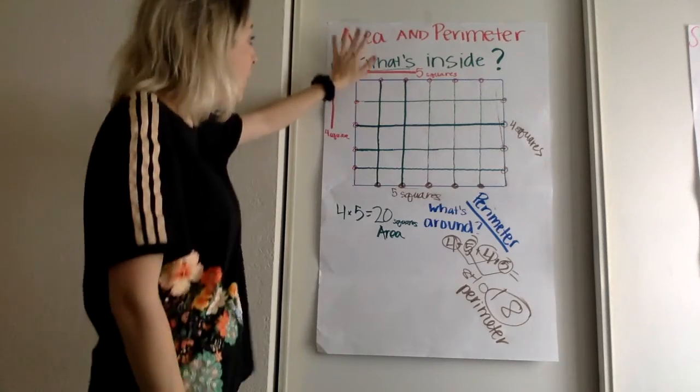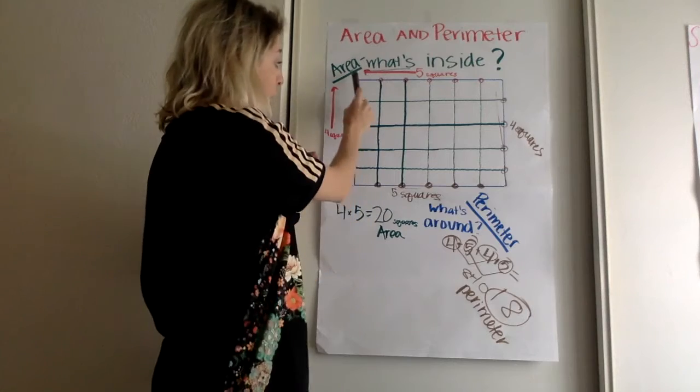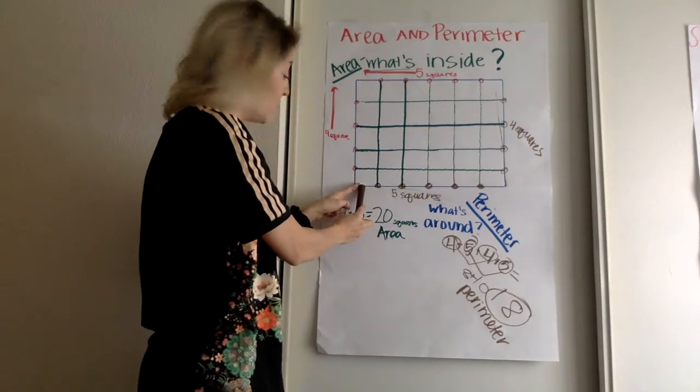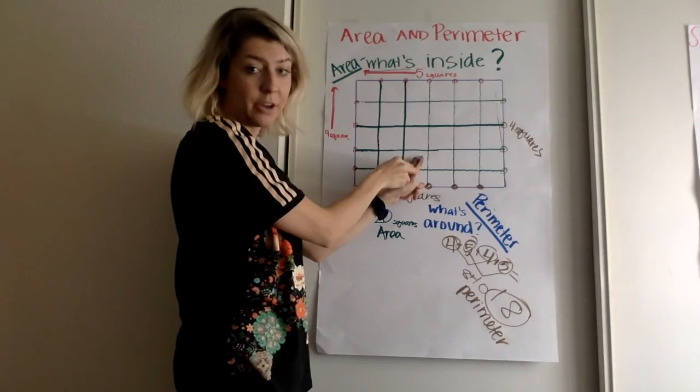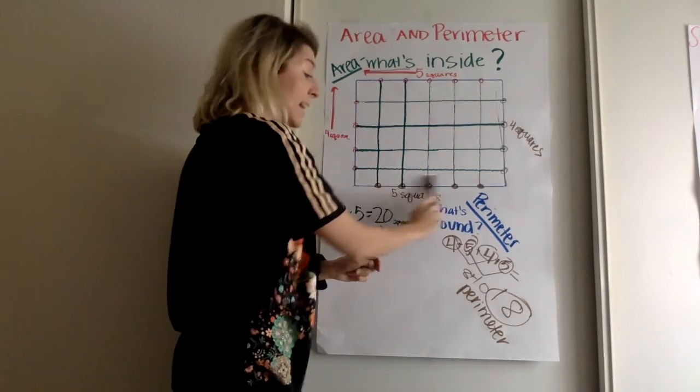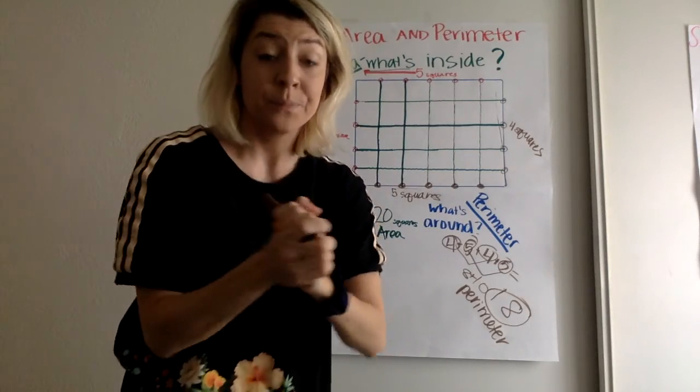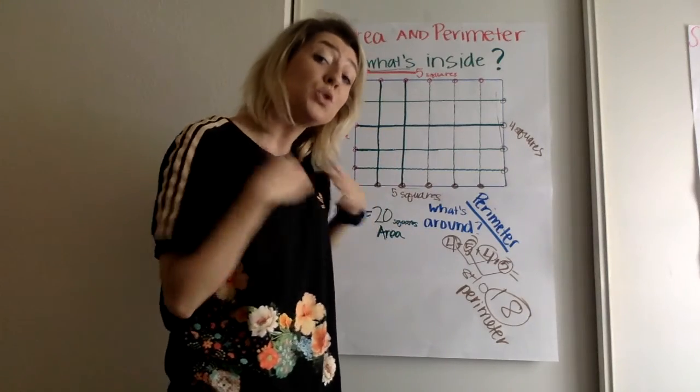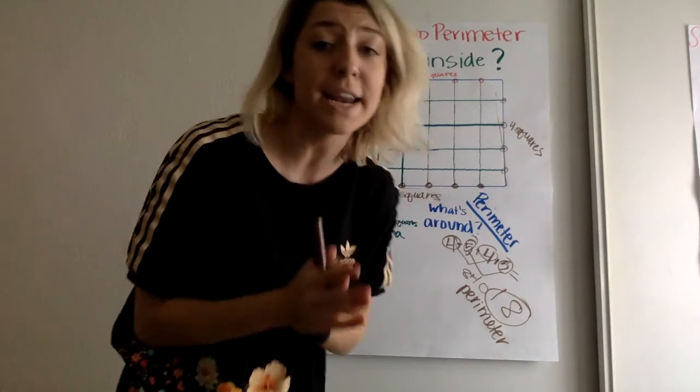All right, so let's review. Area is answering the question of what's inside. You count the amount of squares on one side, count them on the other side, and you multiply them together. For perimeter, you take the length of each side, and you add it all together. This also applies to other shapes, not just quadrilaterals, but we'll get into that later.